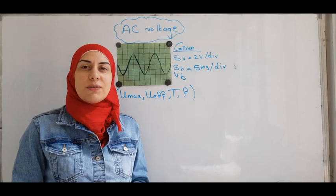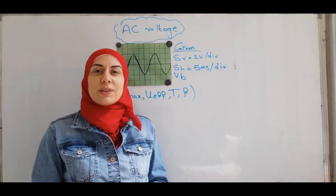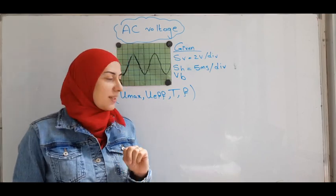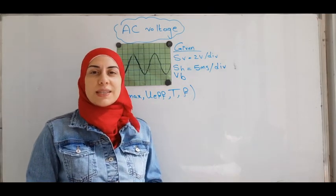This is how the screen of the oscilloscope shows us an AC voltage. The AC voltage is characterized by four characteristics: U maximum, U effective, the period T and the frequency F.